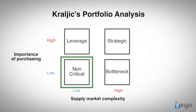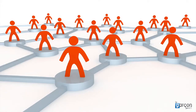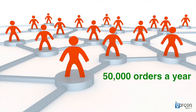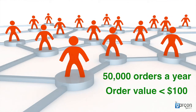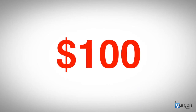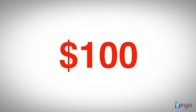So for non-critical categories, the recommended approach is simplification — reducing the indirect transactional costs. I dealt with one organisation that raised more than 50,000 orders a year where the order value was less than $100. Can you imagine that?